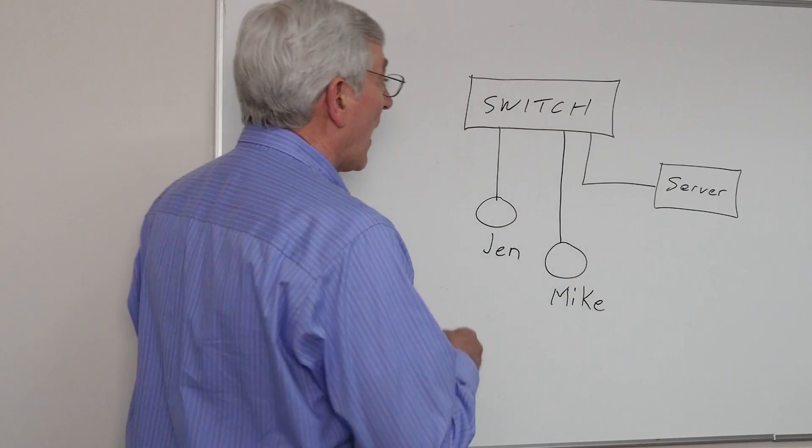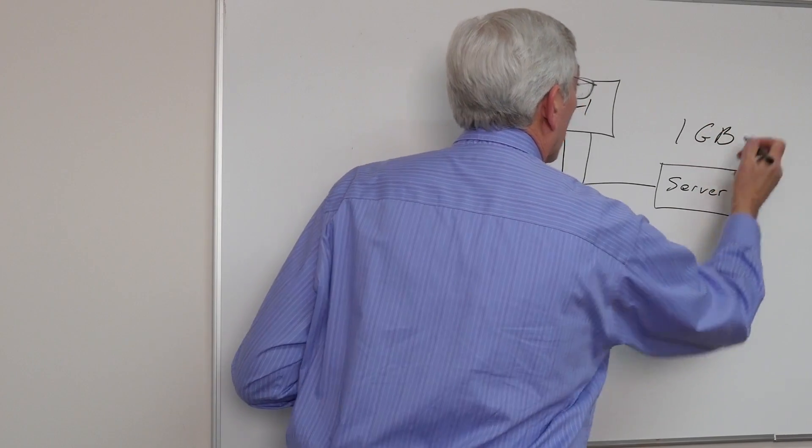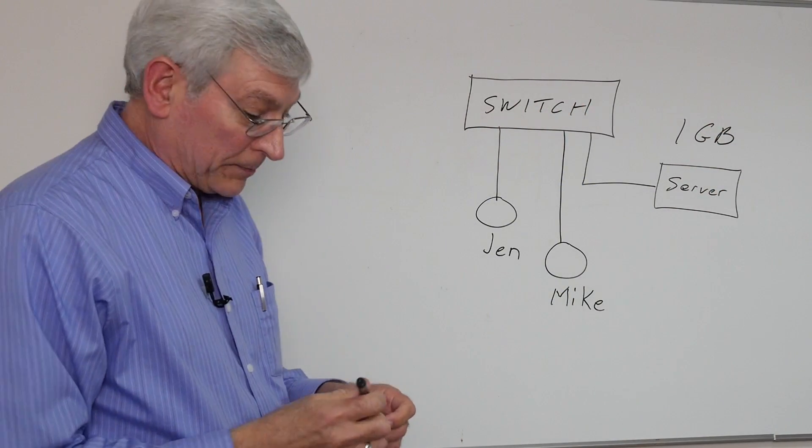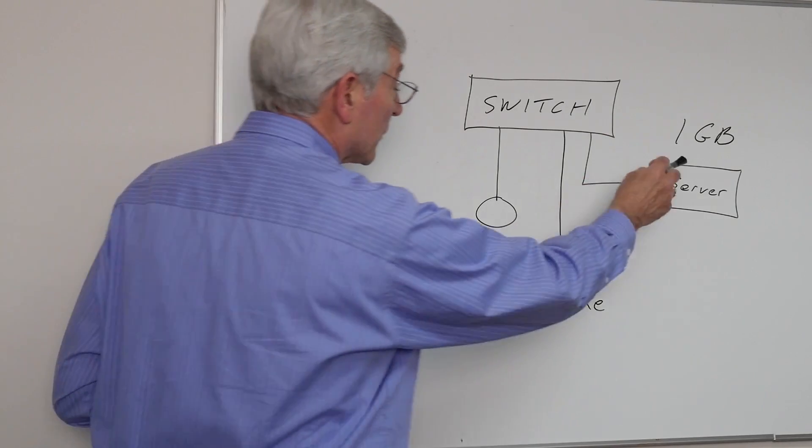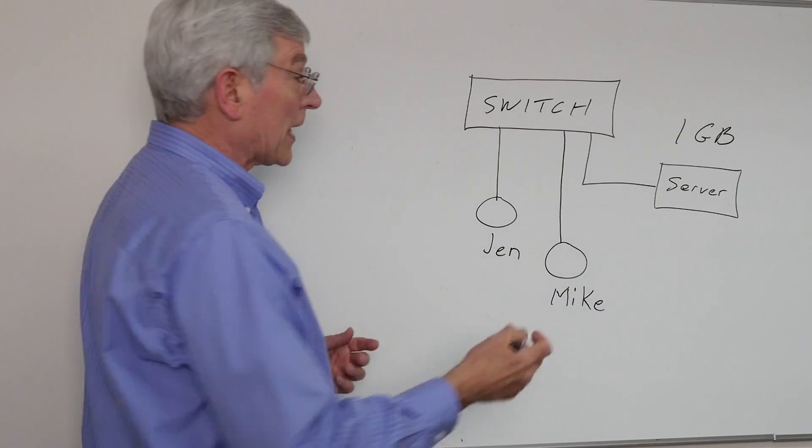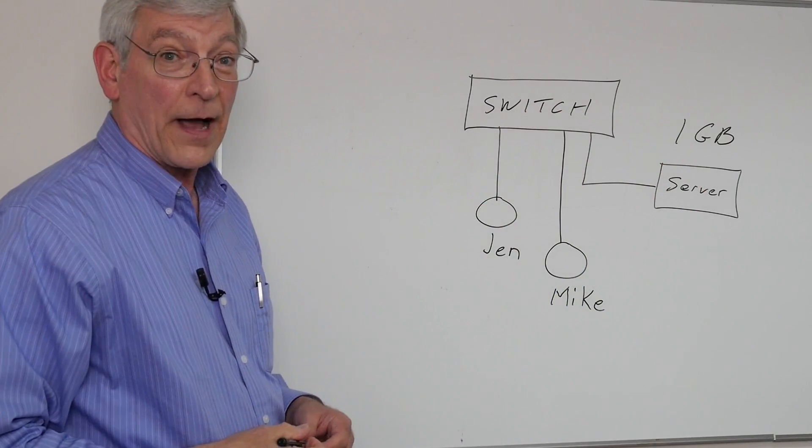So let's say the file that she wants to get is one gigabyte. There are eight bits in a byte. And so that's an eight gigabit file transfer. And so since it's a gigabit per second, it's going to take eight seconds for Jen to download that file.